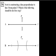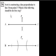We are on problem 56. Scott is constructing a line perpendicular to line L from point P. Which of the following should be his first step?